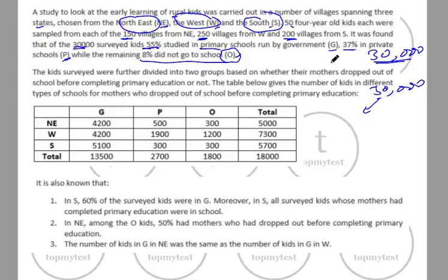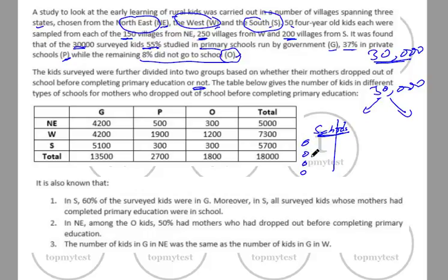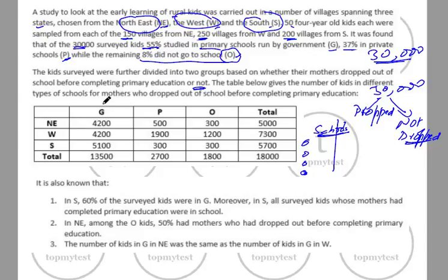There are two distributions: one based on which type of school kids currently attend — G, P, or O — distributed by geography across South, Northeast, and West. The second distribution is based on whether the kids' mothers dropped out of school before completing primary education or not. The table given shows the number of kids in different school types for mothers who dropped out, and this total is 18,000.